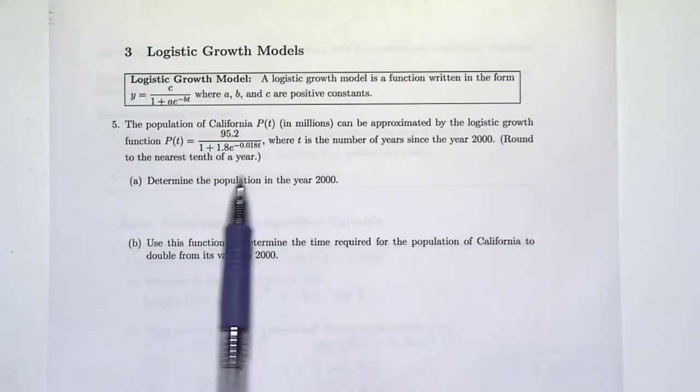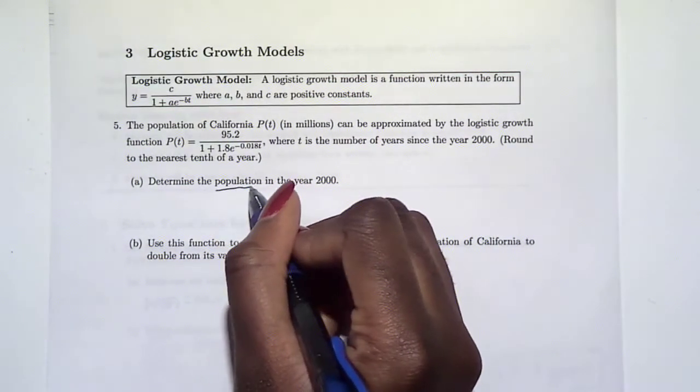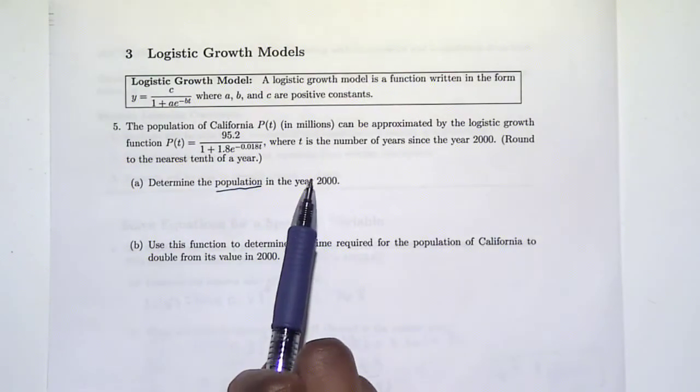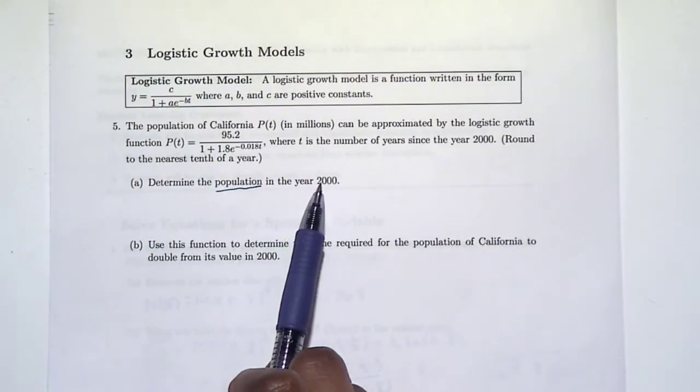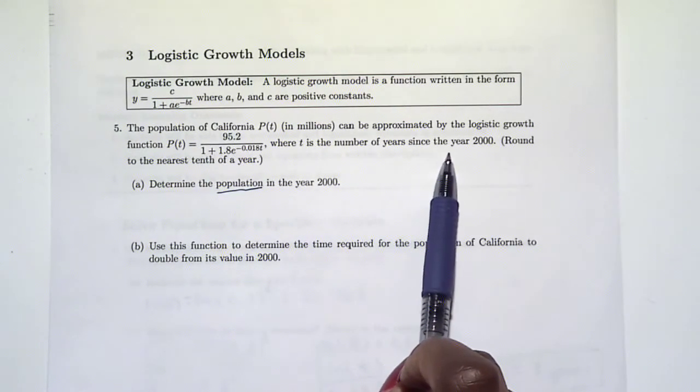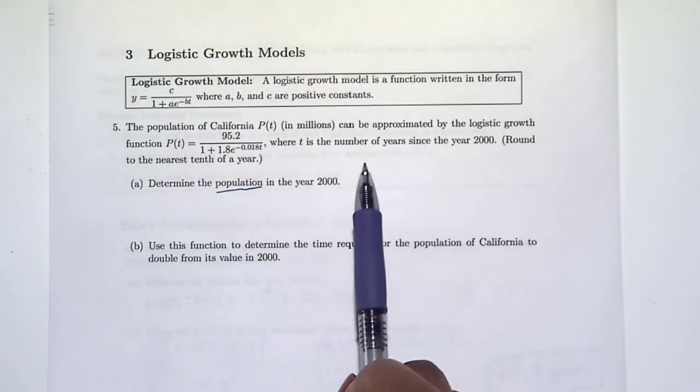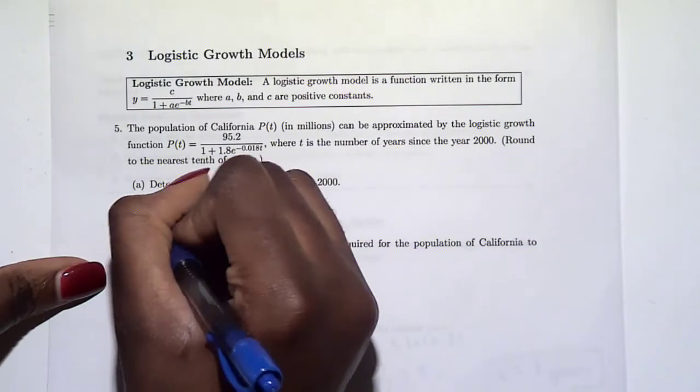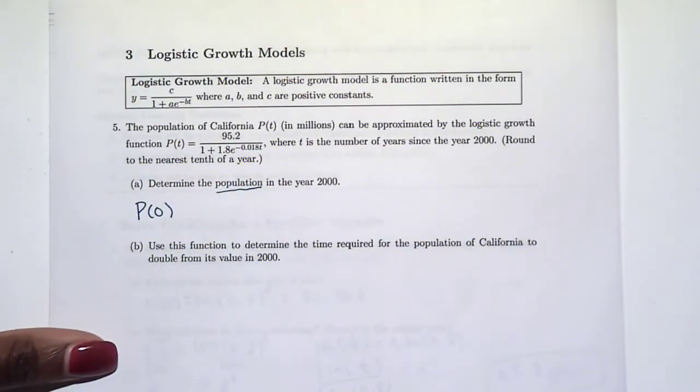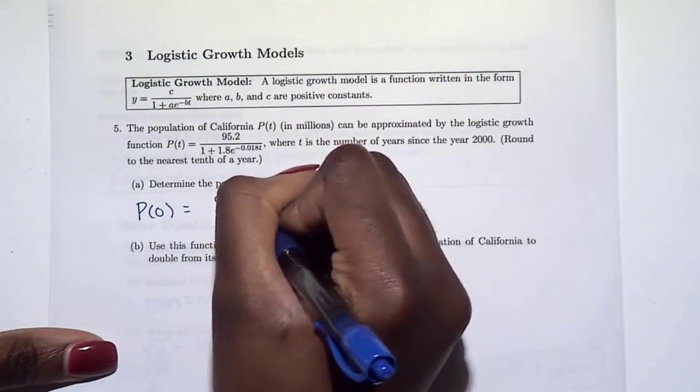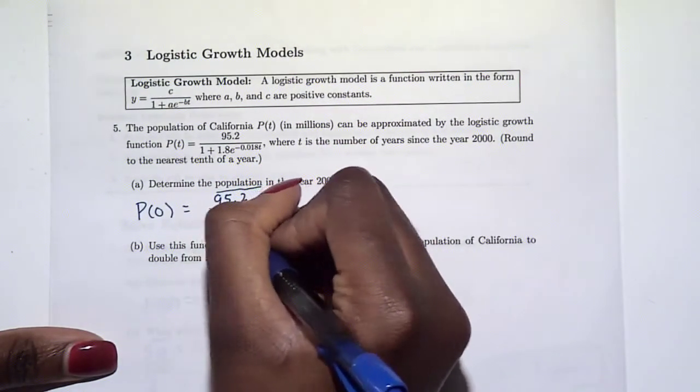We want to find the population when the year is 2000. We have to consider what time we're plugging in. The thing we plug in is the number of years since 2000. When we're in the year 2000, the number of years since 2000 is 0, so we want to find P(0). We plug in 0 into our formula.